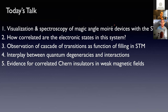What I'd like to do today — feel free to interrupt me as I go along — is to show you how we visualize and do spectroscopy on these devices, and answer the question of how correlated the electronic states are. Then I'll show results from another experiment showing how the spin and valley degrees of freedom give rise to a cascade of transitions as a function of filling. If there is time, I will show you evidence for a correlated Chern insulator — work we just completed and posted online two weeks ago, which is quite exciting for probing the topological nature of these materials with STM.